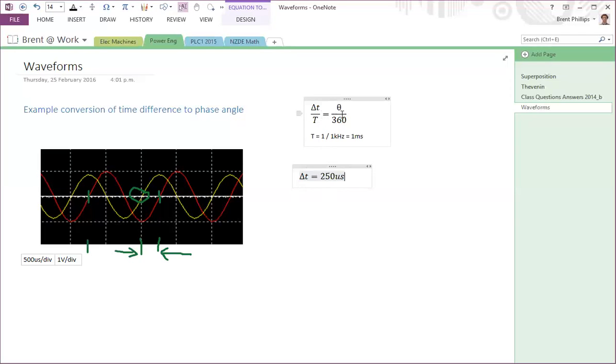We've got the equation at the top there for converting that delta t into an actual angle in degrees. So the key thing there is have a look around the different parts of your graph. You might find one part of the waveform that's quite far away and you can use that.